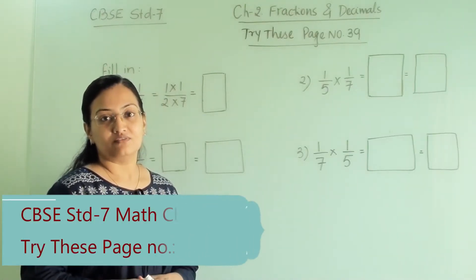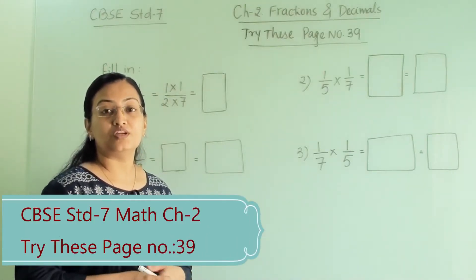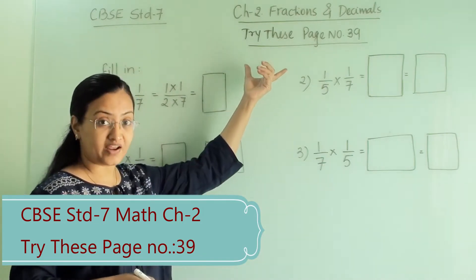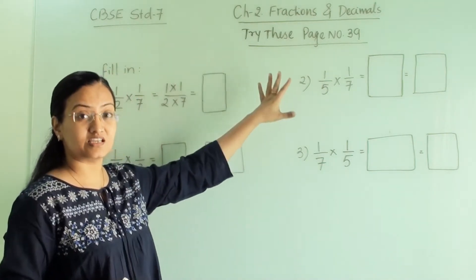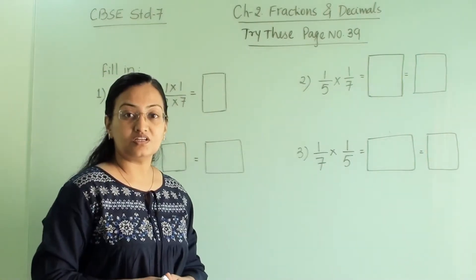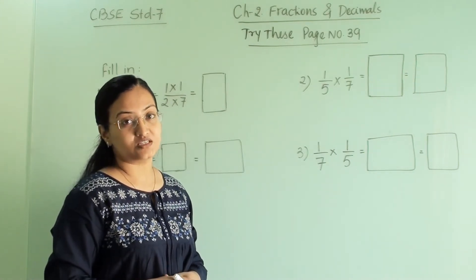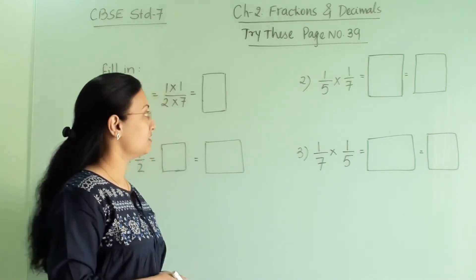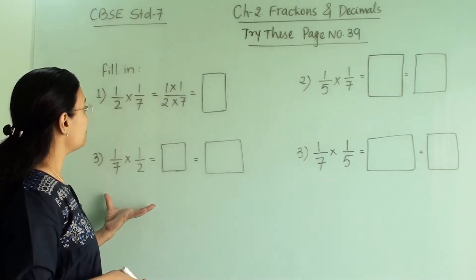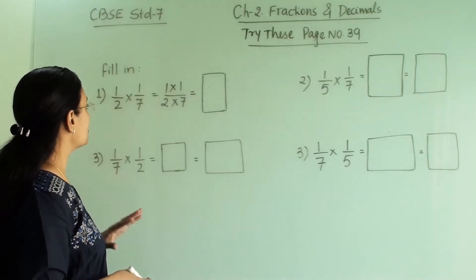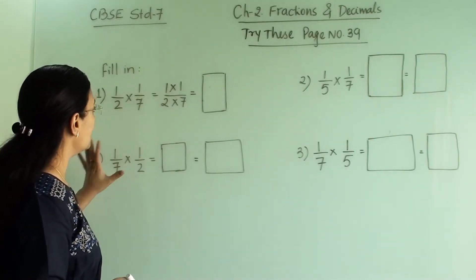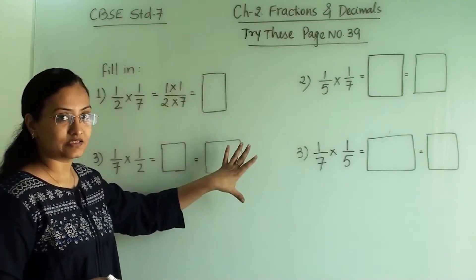Welcome back to Learn Yourself. Today we are going to solve some of the examples from the 'Try This' section, which are from page number 39. This chapter is the second chapter from the CBSE Standard 7 syllabus. These are the 'Try This' examples from page number 39, and in that we have to fill in some of the blanks.